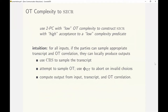If for all inputs, the parties can sample appropriate transcripts and OT correlations, they can use them to produce the outputs locally without communicating with each other. How do we go about sampling transcripts and OT correlations without communicating?